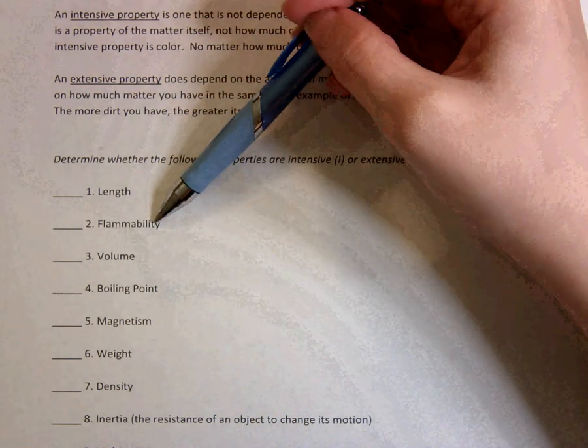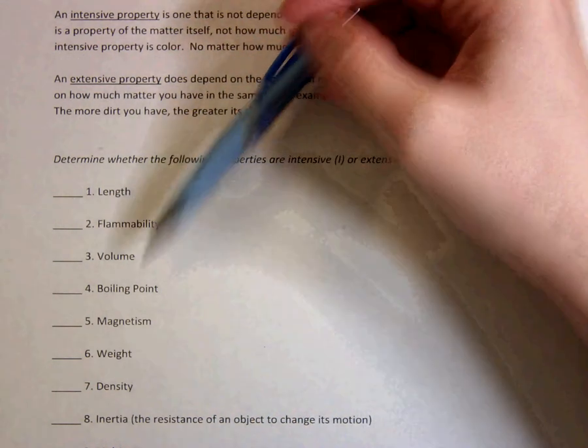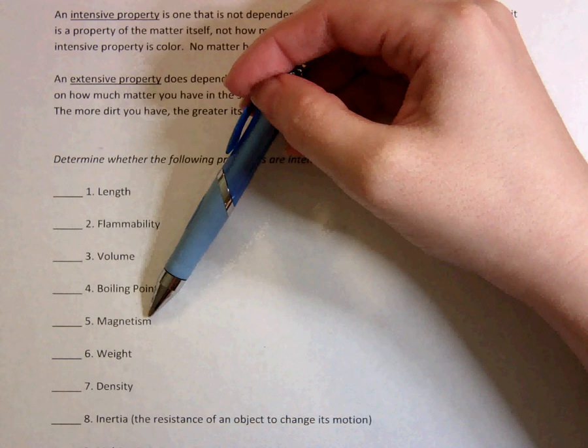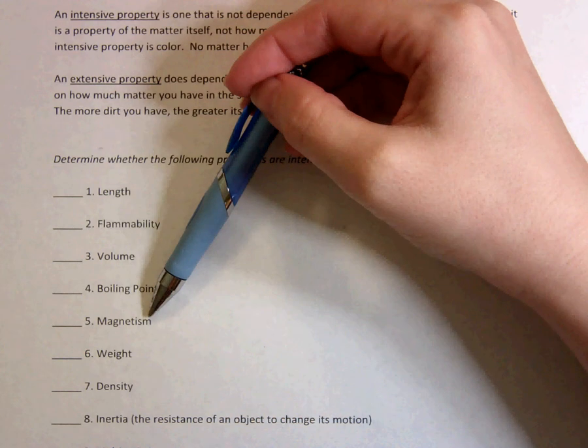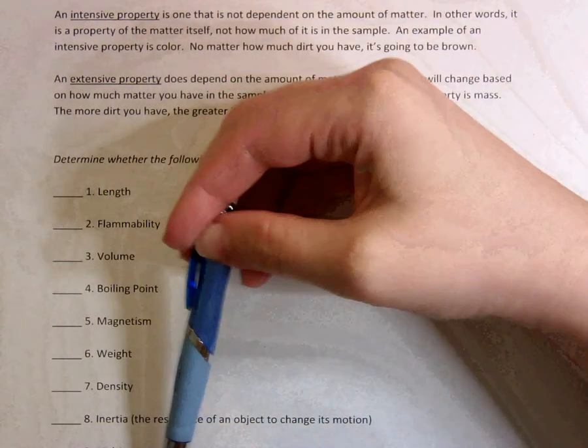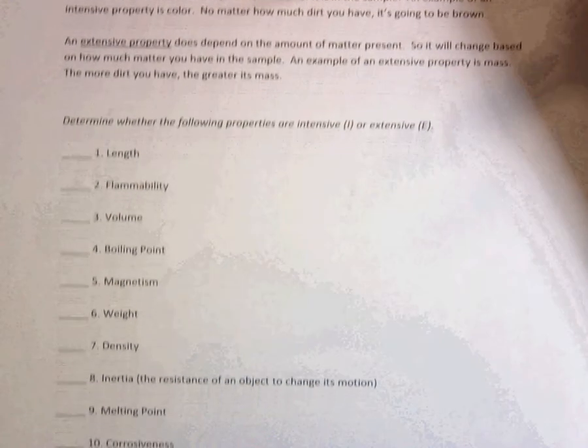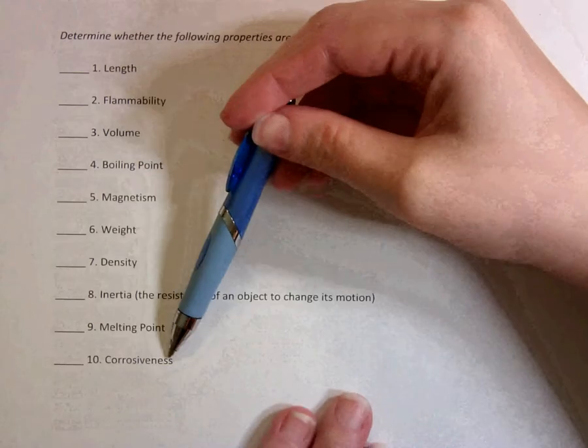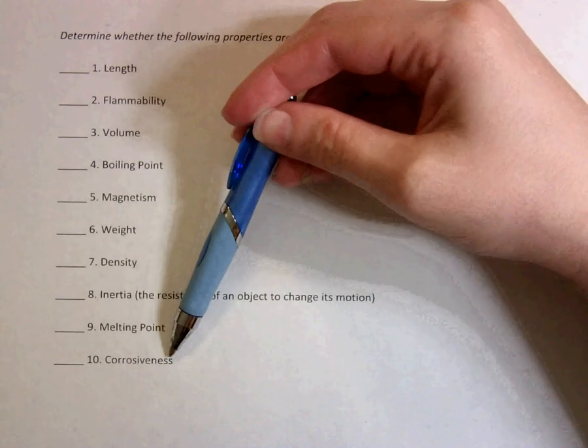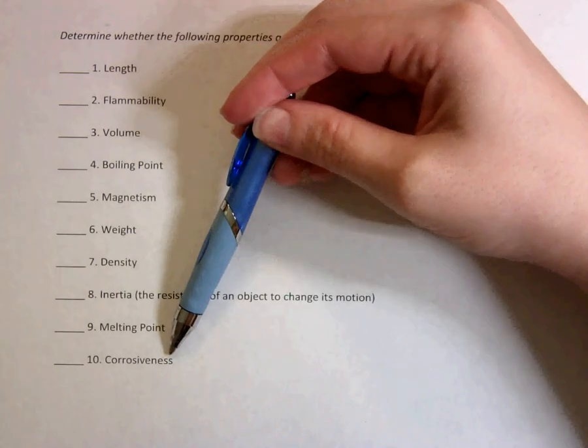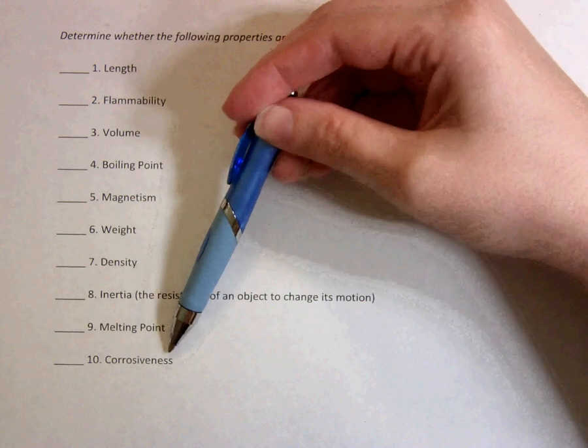Flammability is whether or not it will burn. Magnetism is whether or not it will attract a magnet. And corrosiveness is whether or not something will corrode, which means will it get eaten away by an acid.